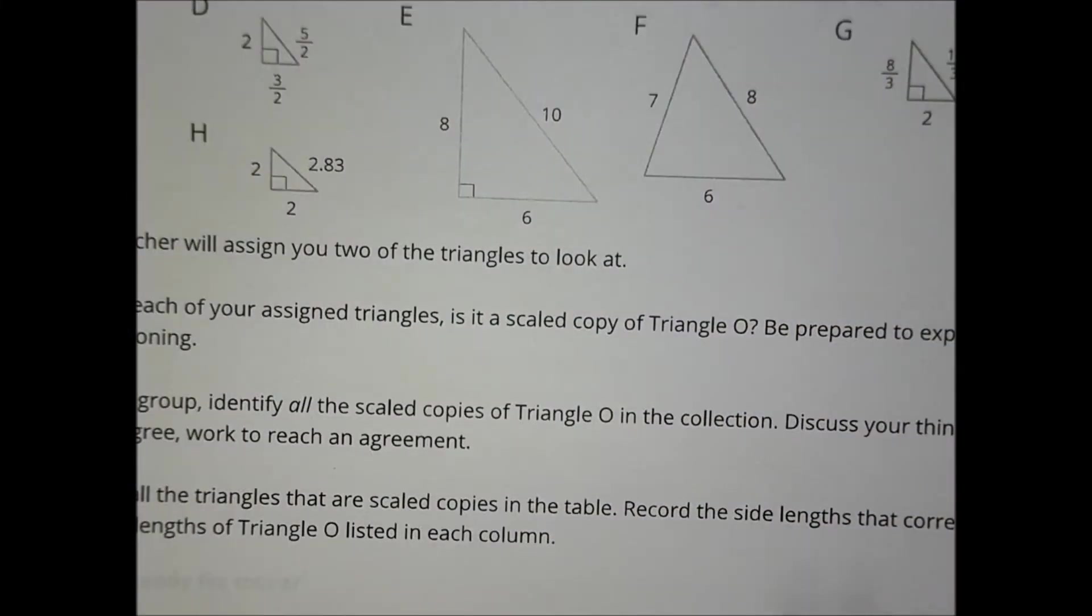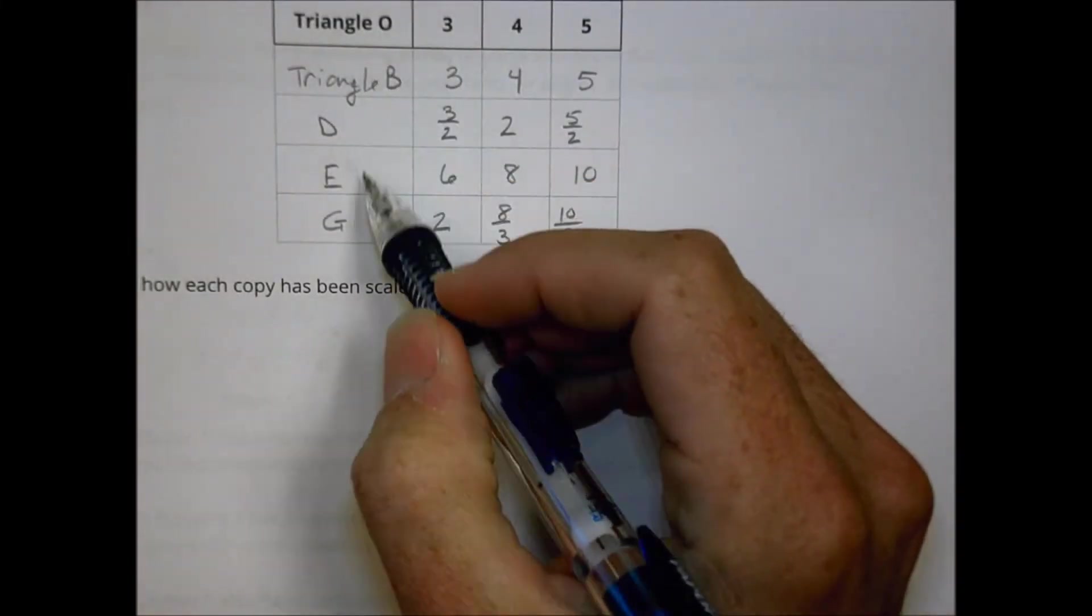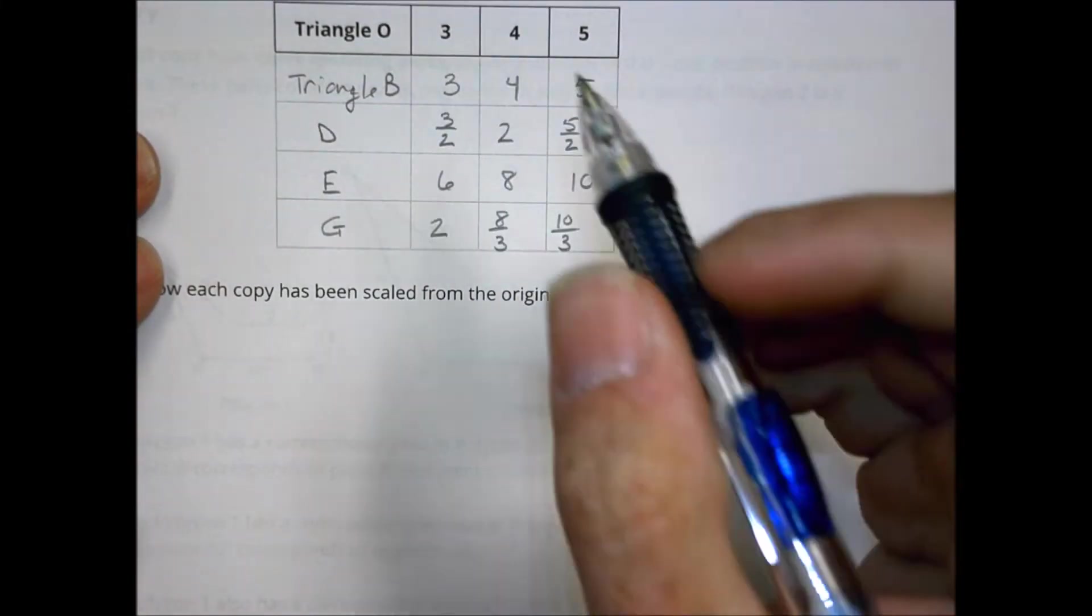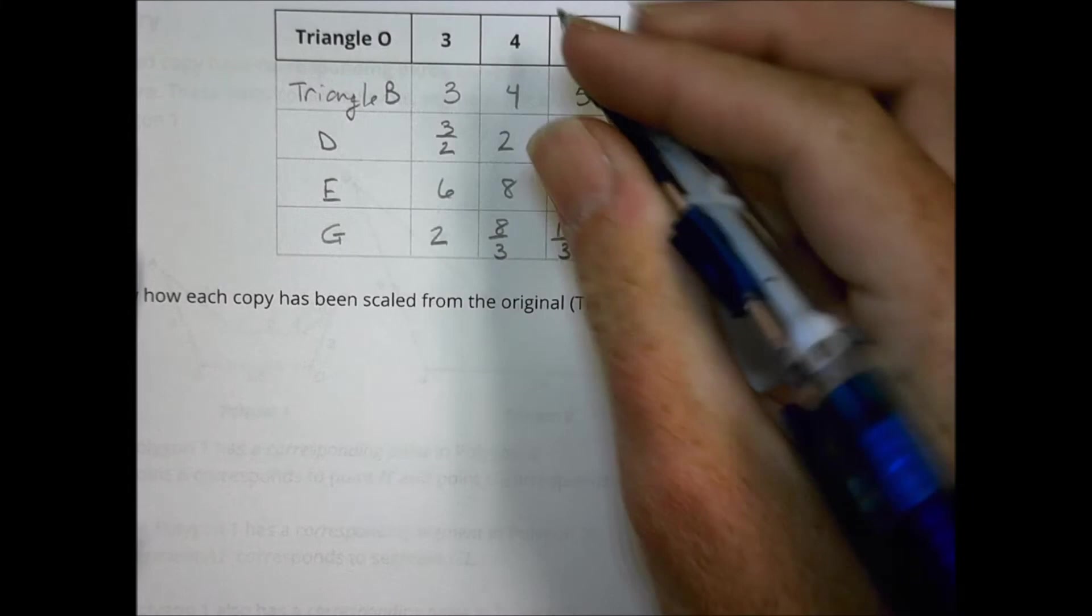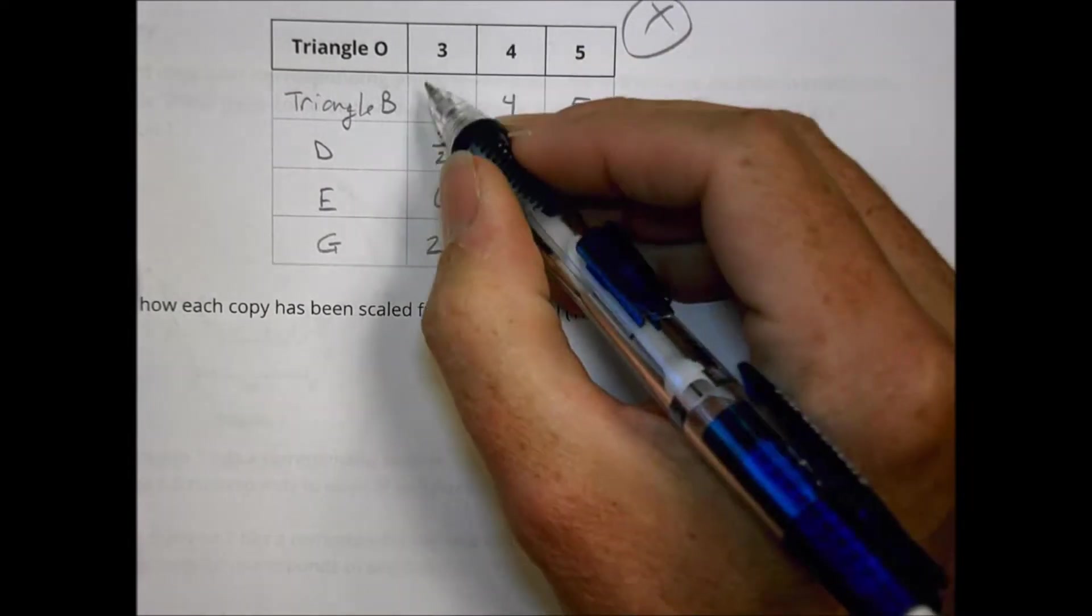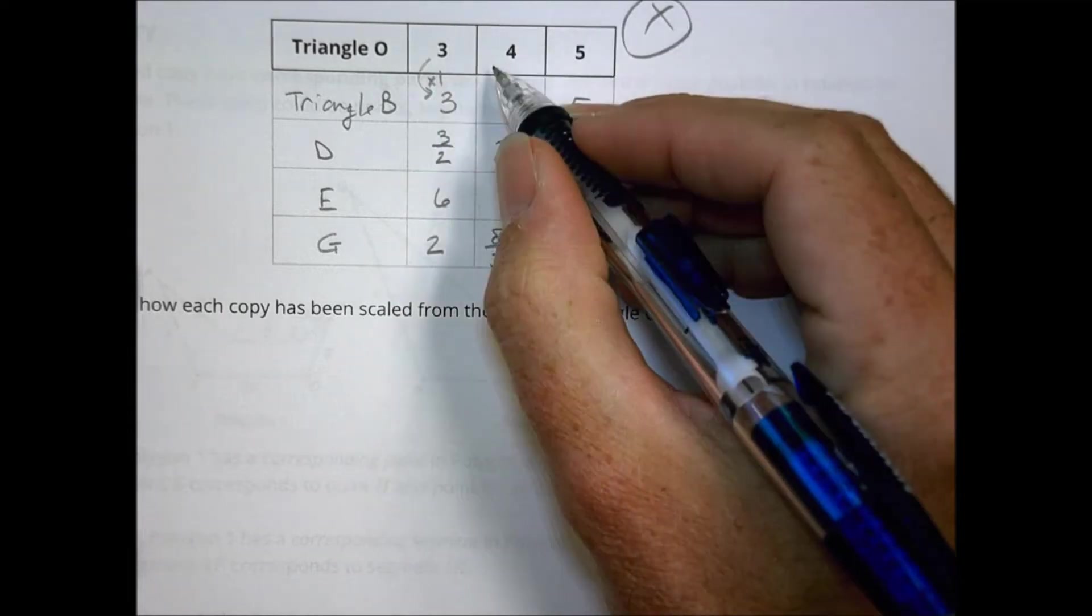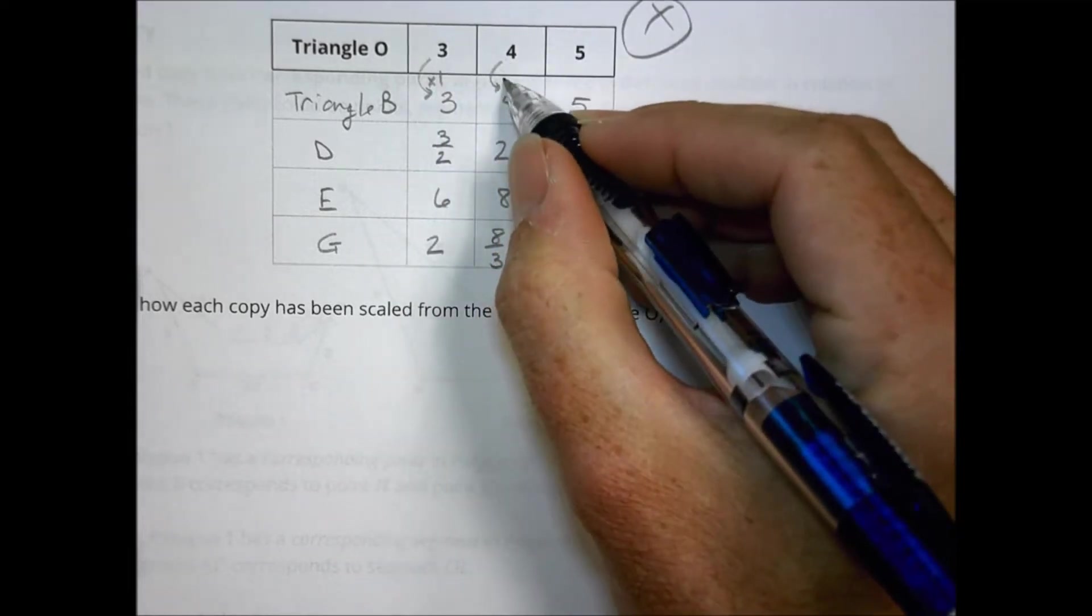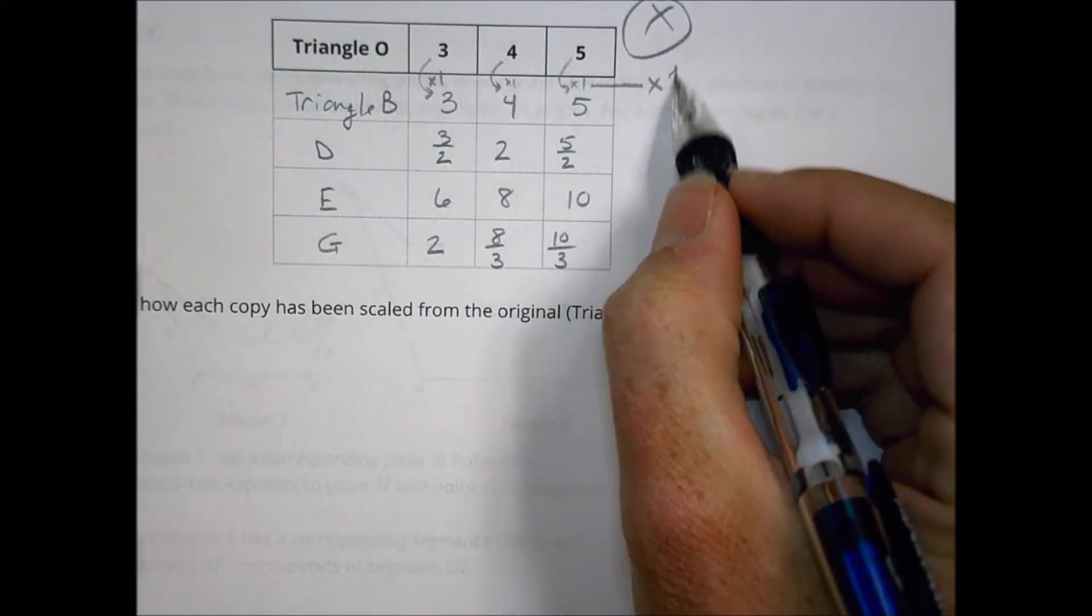And so when you were looking at those different triangle shapes, you then made a chart dealing with the different triangles. Now, because you were assigned different ones, you might have different ones in your chart than what I have here. But I noted here that B, D, E, and G were all, to me, similar triangles. And the reason for that was that when I looked at the side lengths, the side lengths had a scale factor in common. So for example, to go from a three in my original to a three, that's a scale factor of multiplying by one. And that same scale factor continues here. Four times one is four and five times one is five. So that scale factor is a multiplication factor of times one.